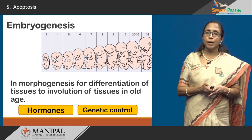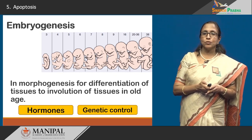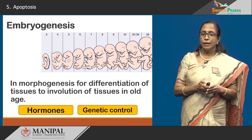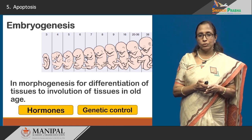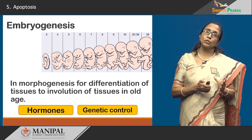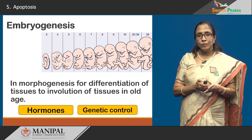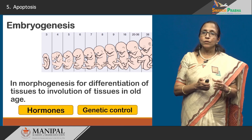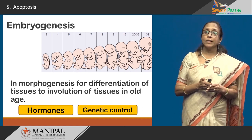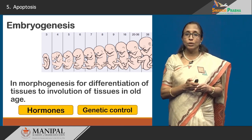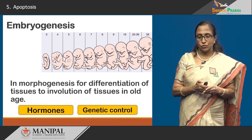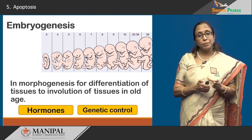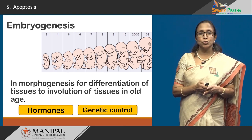In the formation of the embryo, from that single cell to the time the baby is born, in various types of organogenesis, in the differentiation of the tissue — be it in the formation of a male or a female child, how the various reproductive systems form, in the various processes of development. Then when the involution of the tissues occurs in old age, all these involve hepatosis, and many times they are dependent on hormones and there may be a genetic control added on into them.